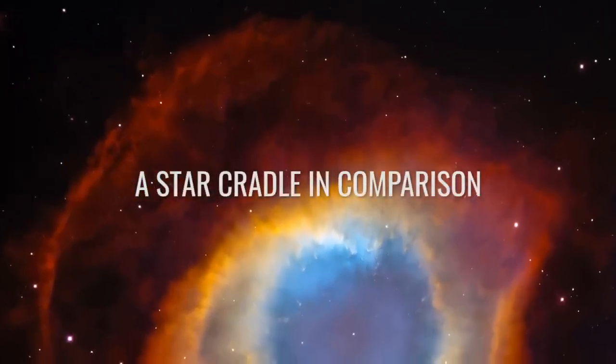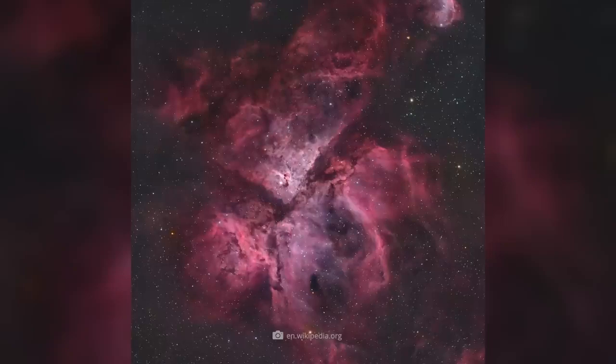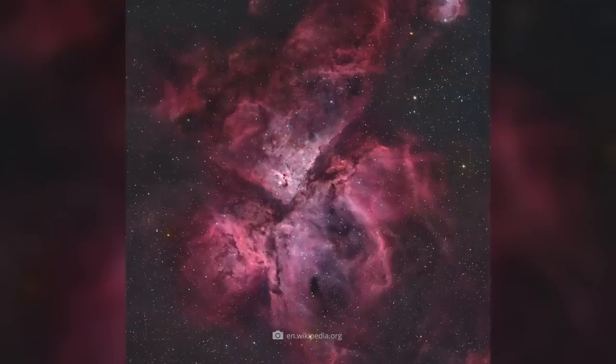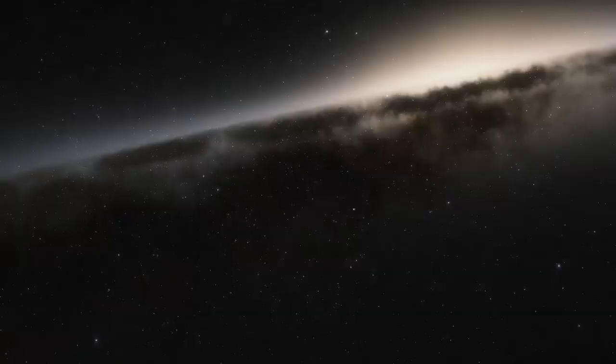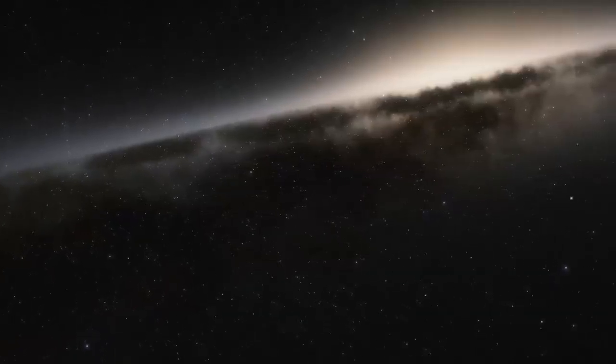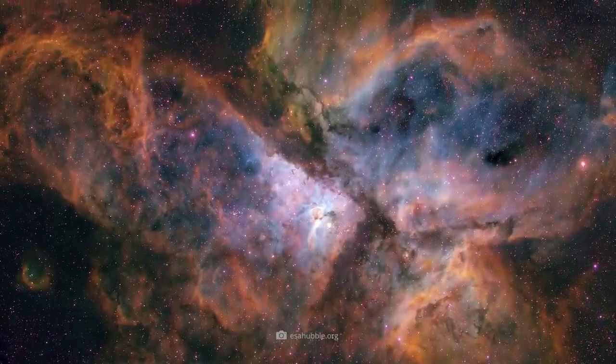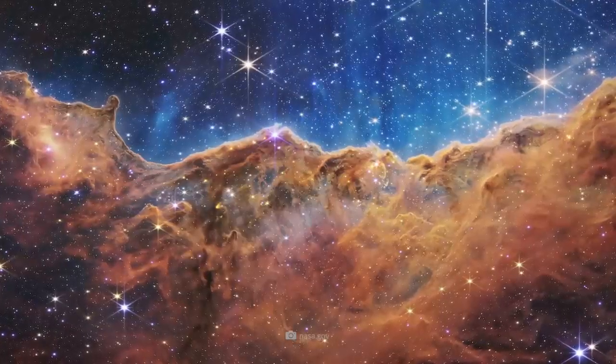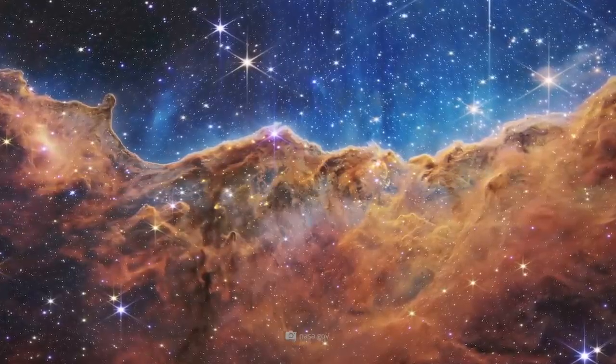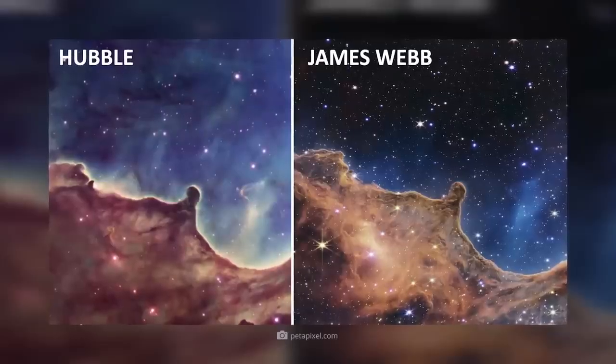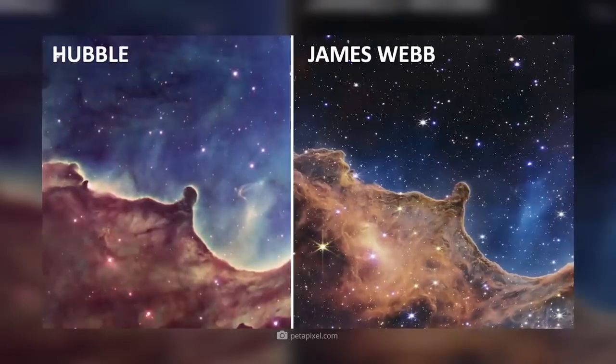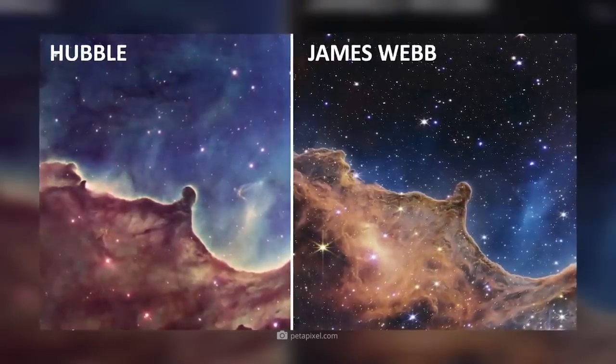A star cradle in comparison. A look at the Carina Nebula also shows what the often-cited dawn of a new research chapter is all about visually. Located in the constellation Kiel of the ship and about 9,000 light-years away from us, the colossal structure has a reach of up to 300 light-years. In detail, the Carina Nebula embodies one of the most significant stellar cradles in the Milky Way. And yet, a brief comparison between the Hubble and Webb images reveals how many sparkling secrets once lay hidden behind the dense clouds of dust and gas.